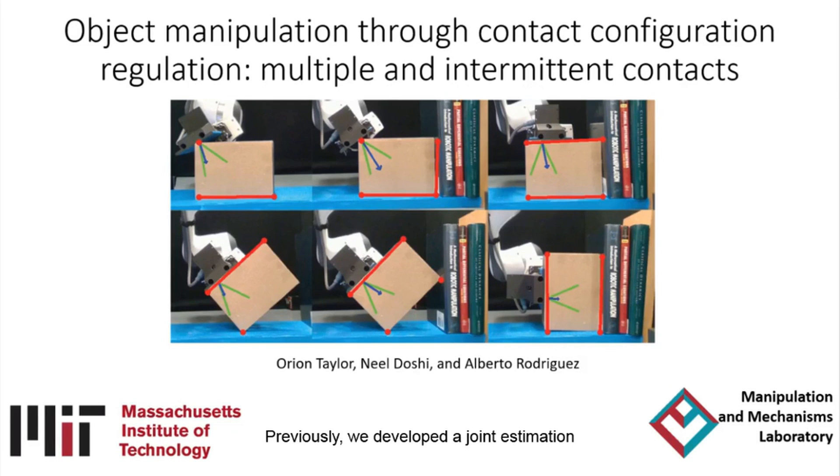Previously, we developed a Joint Estimation and Control Framework for manipulating unknown objects via tactile feedback. We have expanded the set of contact interactions that can be regulated by our system to include multiple and intermittent contacts between the object, end effector, and environment.